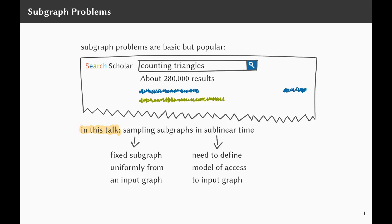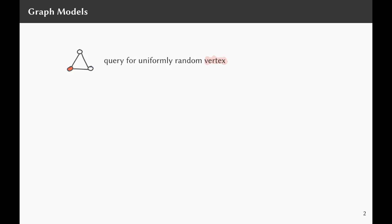In sublinear algorithms, it is very important to define the model of access to the input graph, because that defines how powerful a sublinear algorithm is. For example, we might want to allow an algorithm to query for a uniformly random vertex from the input graph. For sparse graphs, we might want to allow what we often call an adjacency list query, where the algorithm specifies a vertex and gets in return the i-th neighbor of that vertex.